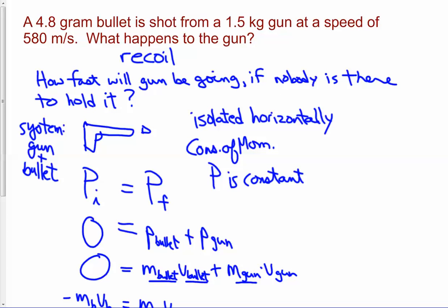We did an example of a bullet being shot from a gun. The gun-bullet system was isolated — there was no net external force. Gravity is acting downward, but we assume something is holding it upward, so that cancels. There's no horizontal force, at least initially. Once the gun is fired, the hand holding the gun will have to push back, but initially the hand is not pushing horizontally. So the gun and the bullet together was an isolated system.